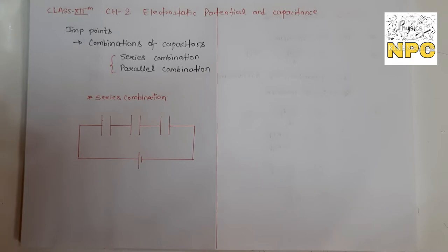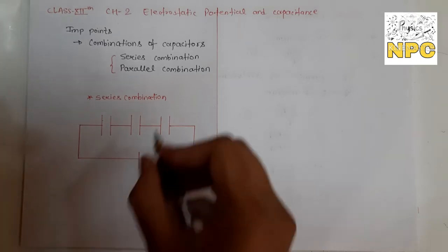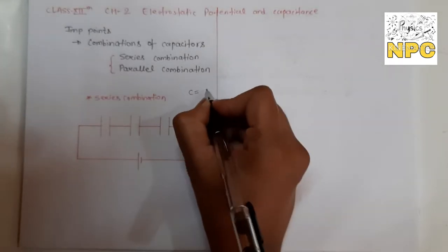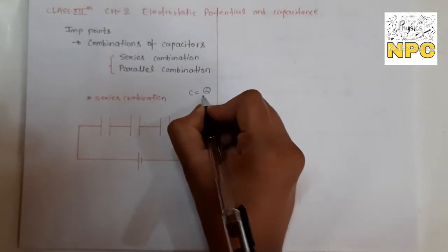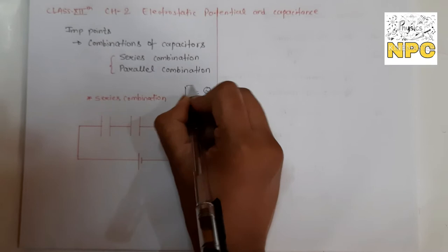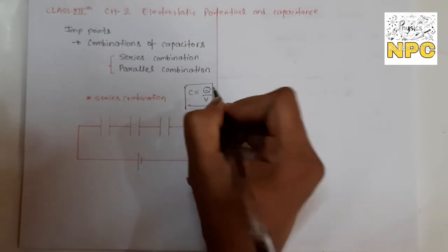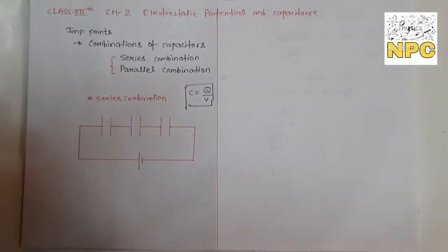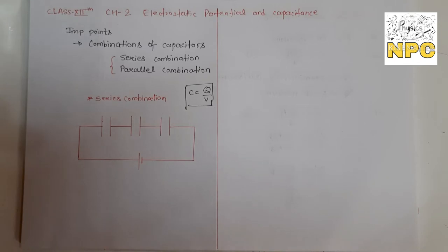We all know about the capacitance of a capacitor, which is given by the formula C equals Q by V. This equation from my last video lecture will be helpful in this combination of capacitors. The combination of capacitors will be of two types.